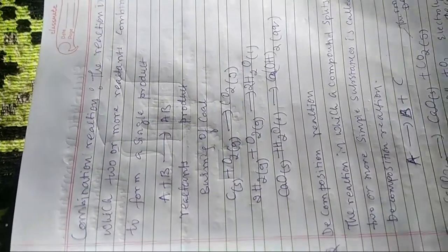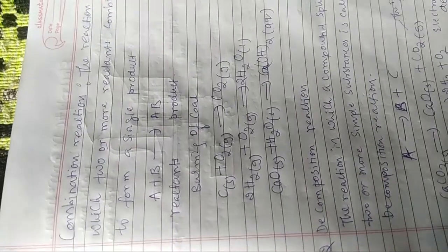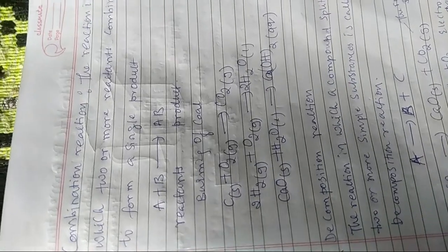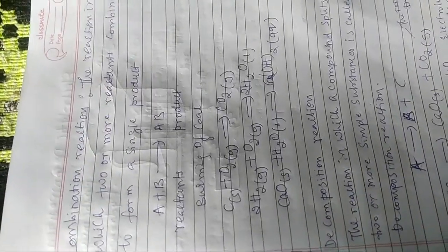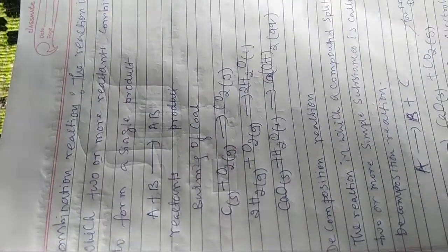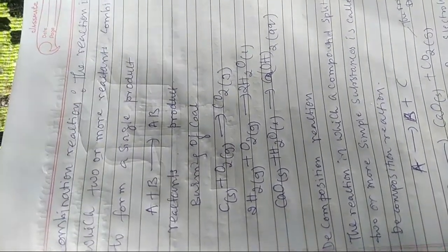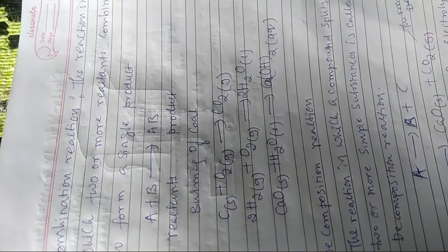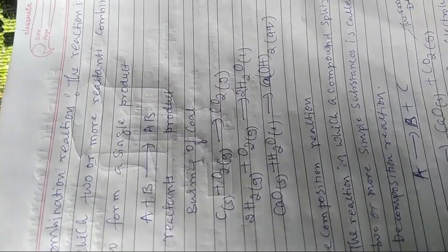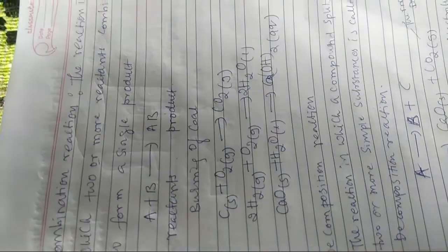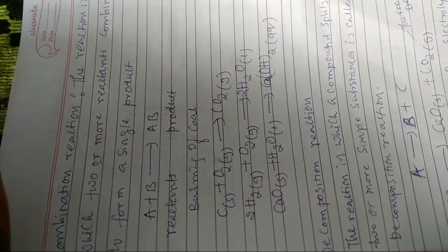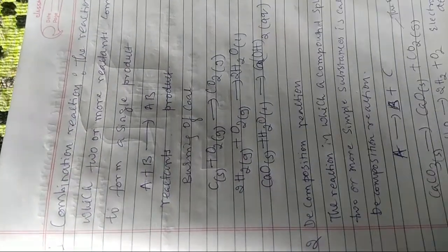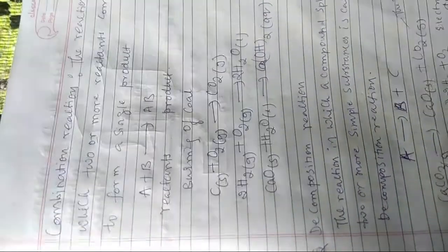Examples: burning of coal — carbon (solid) in the presence of oxygen (gas): C + O₂ → CO₂. Similarly, H₂ + O₂ → 2H₂O — water is a single product and we have two reactants. Also, CaO mixed with water gives Ca(OH)₂, which is in aqueous form. Next we have decomposition reaction, which we shall discuss in the next class.